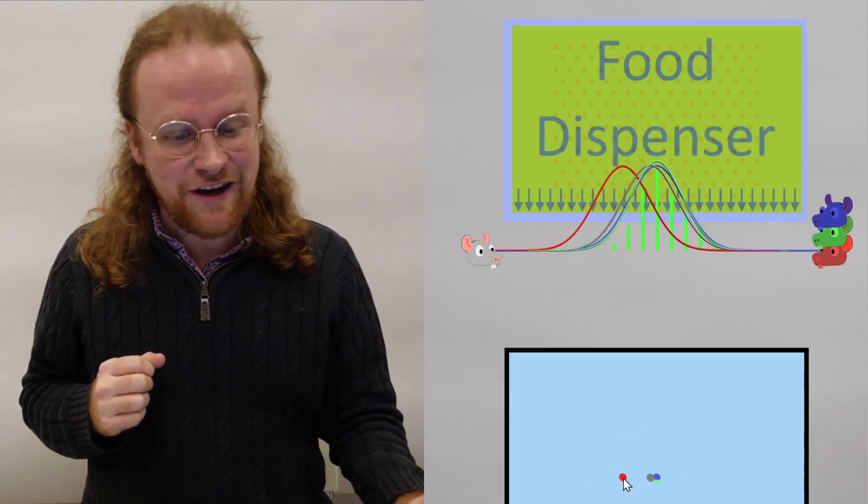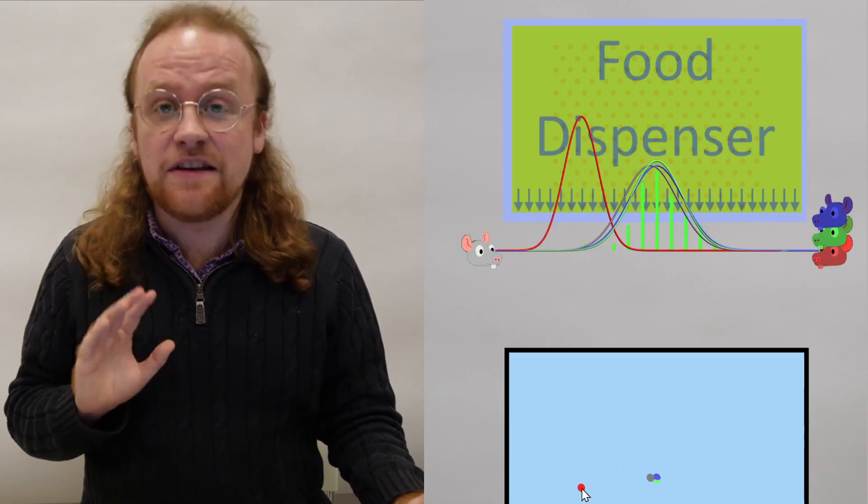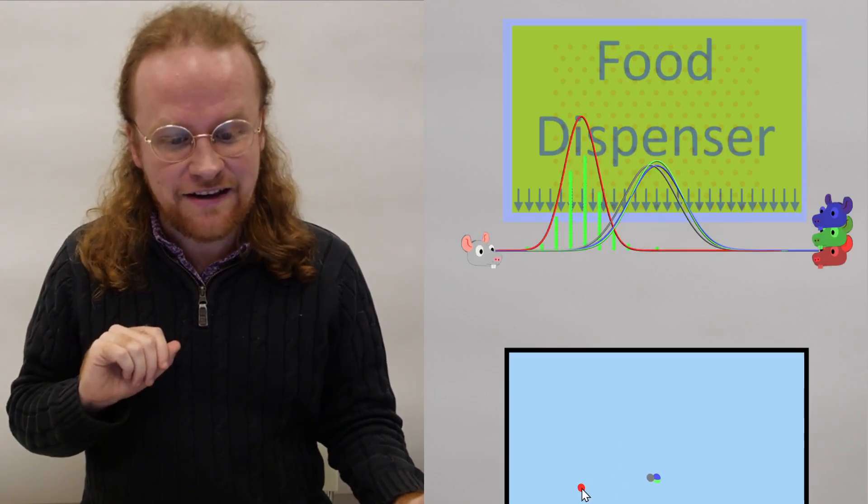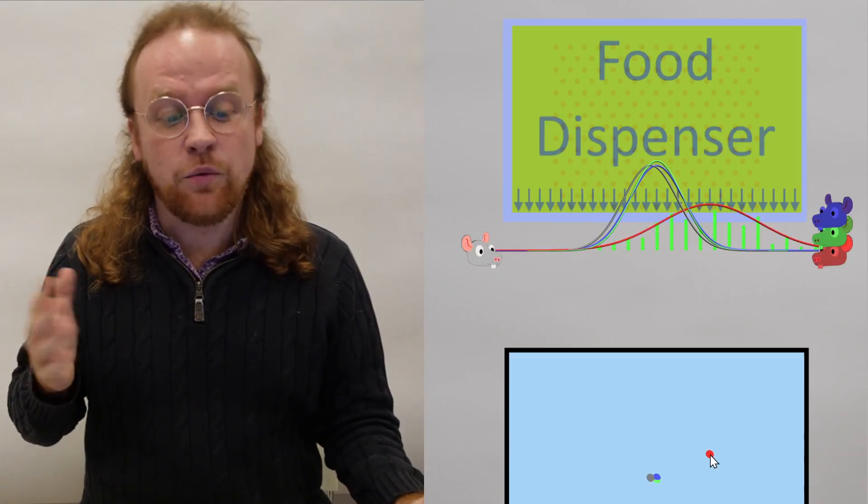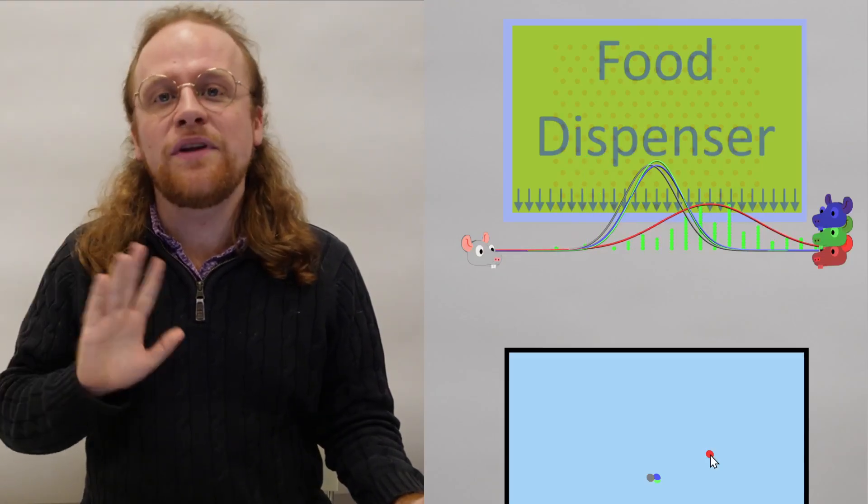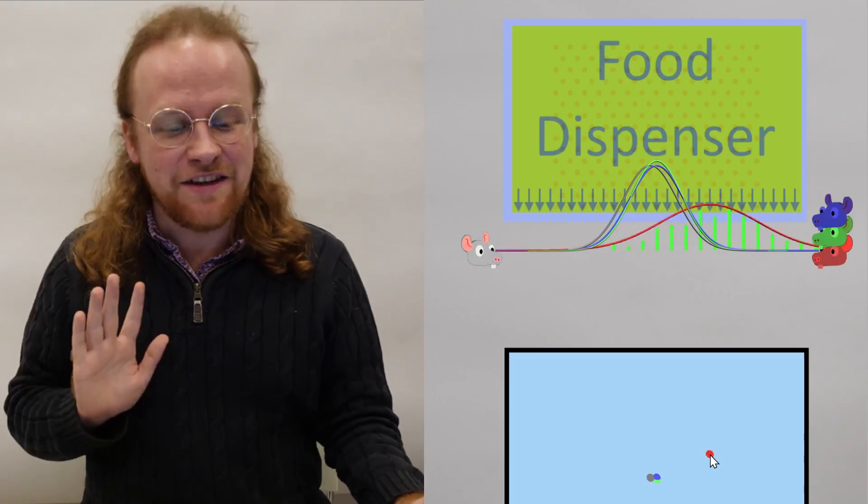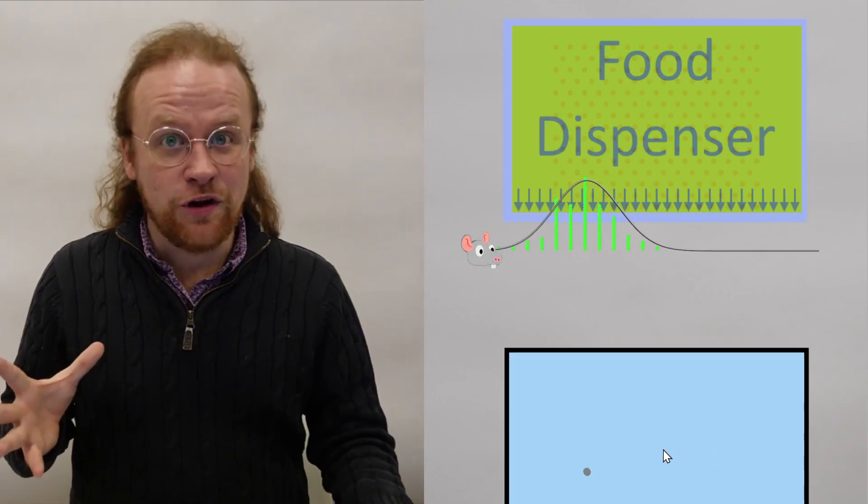If the belief is like this, then the rat expects the food to come out like that. And if the belief is like this, then the rat will expect to see something like this. And what I'm doing right now is called sampling from the probability distribution that is the rat belief.